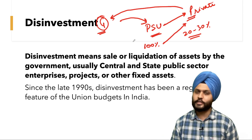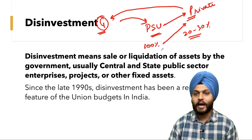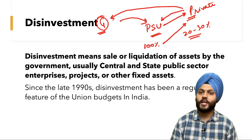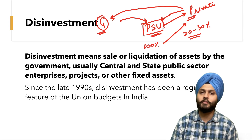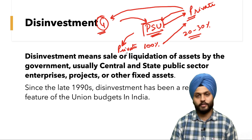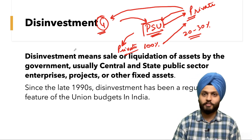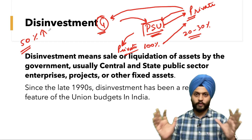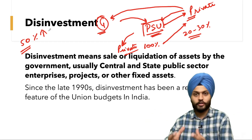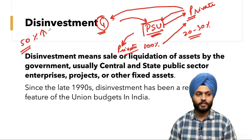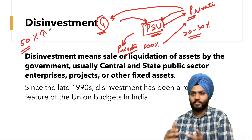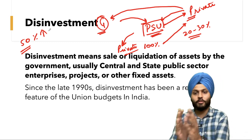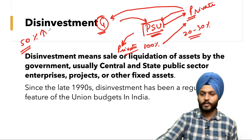In strategic disinvestment, shares are sold in such a way that the management control of the PSU goes to the private sector. It is not necessary that the government sells more than 50% — what matters is that management control is transferred to the private sector.